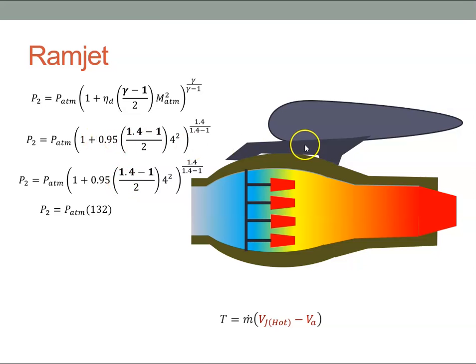This is a ramjet, so I want you to imagine an aircraft traveling at Mach 4. So the Mach number is equal to 4.